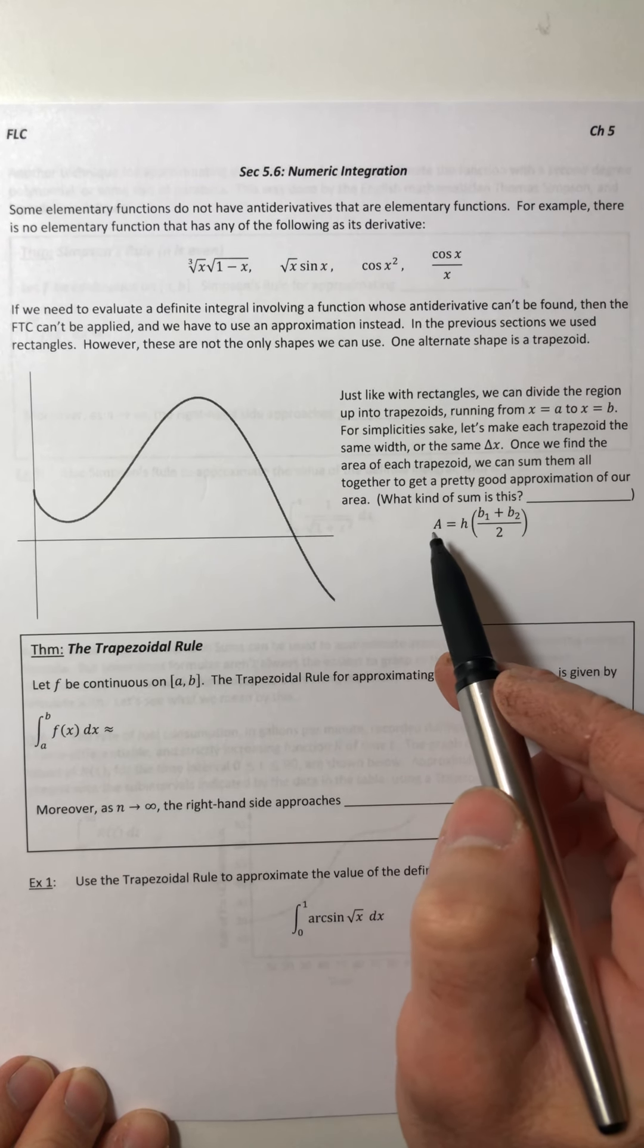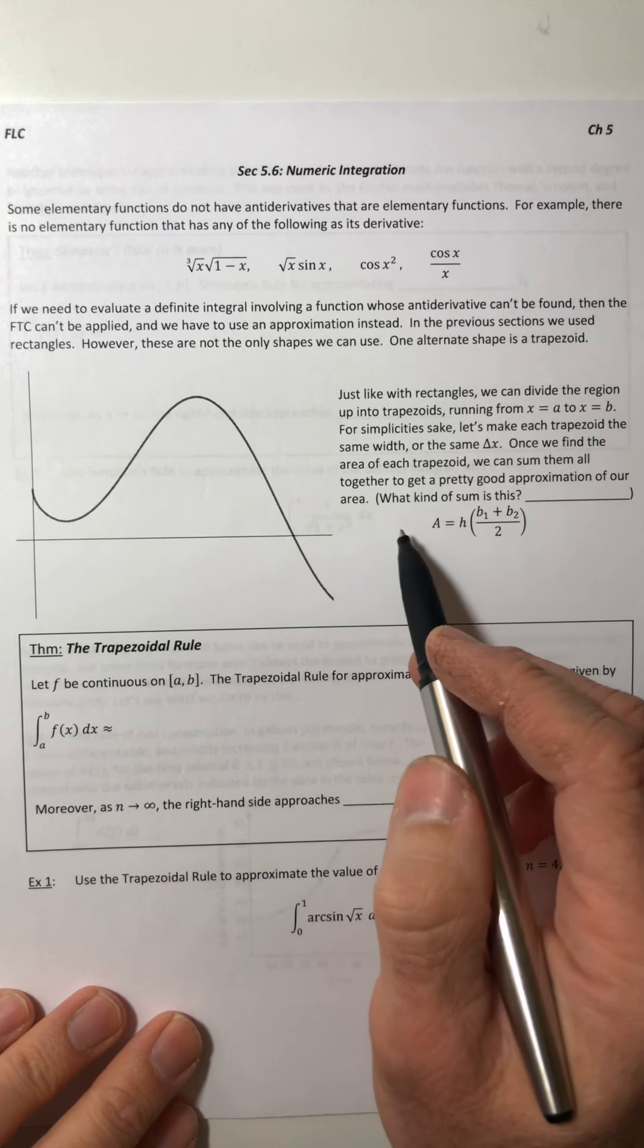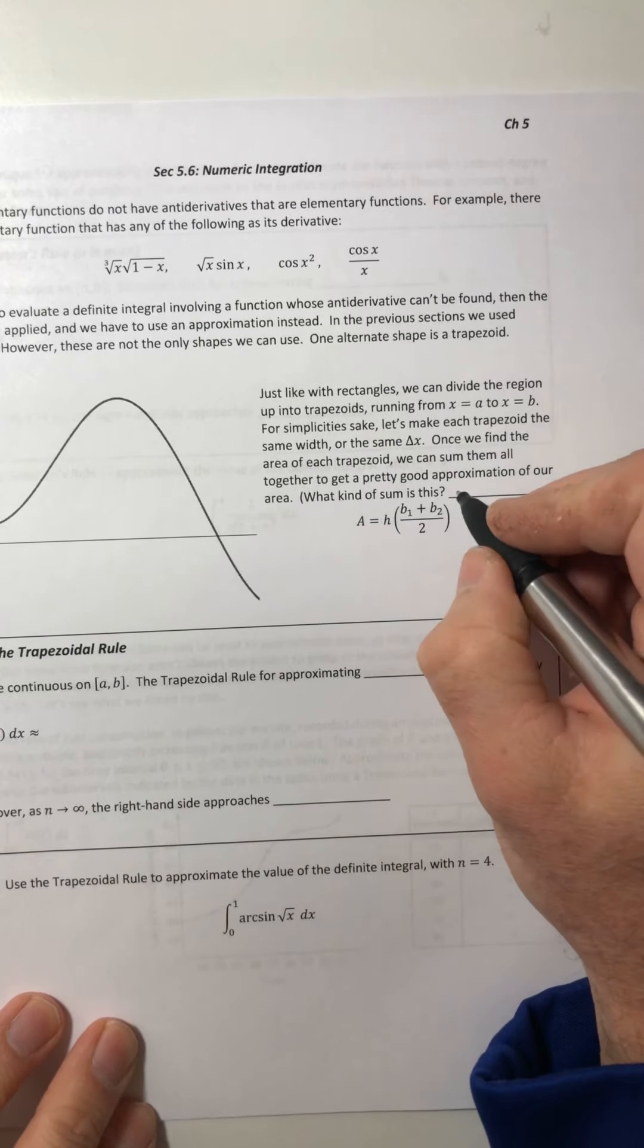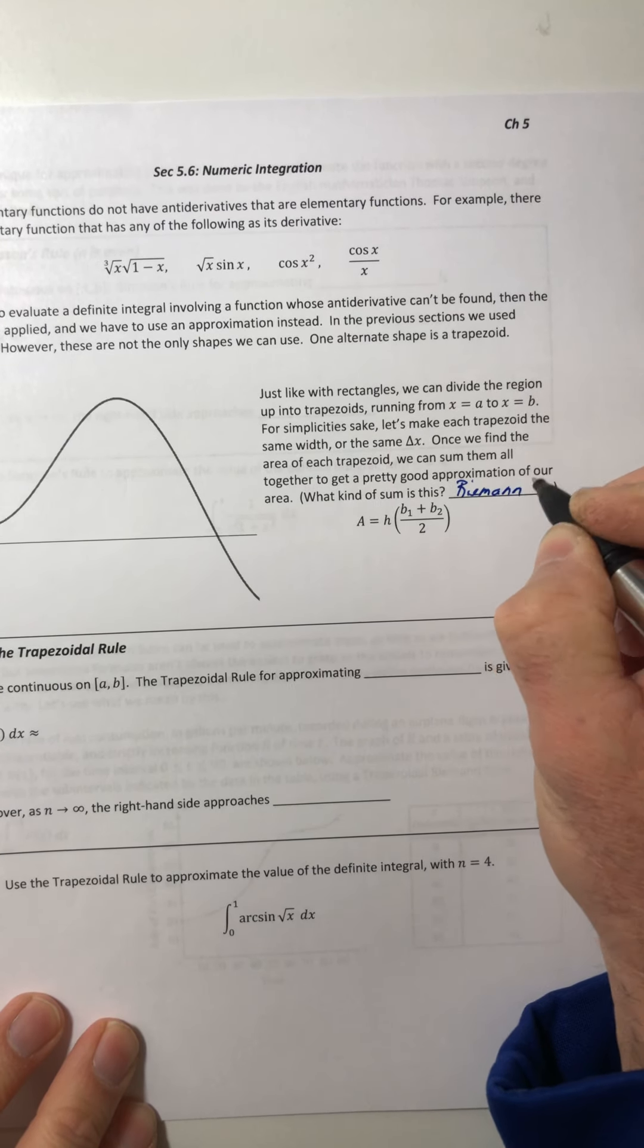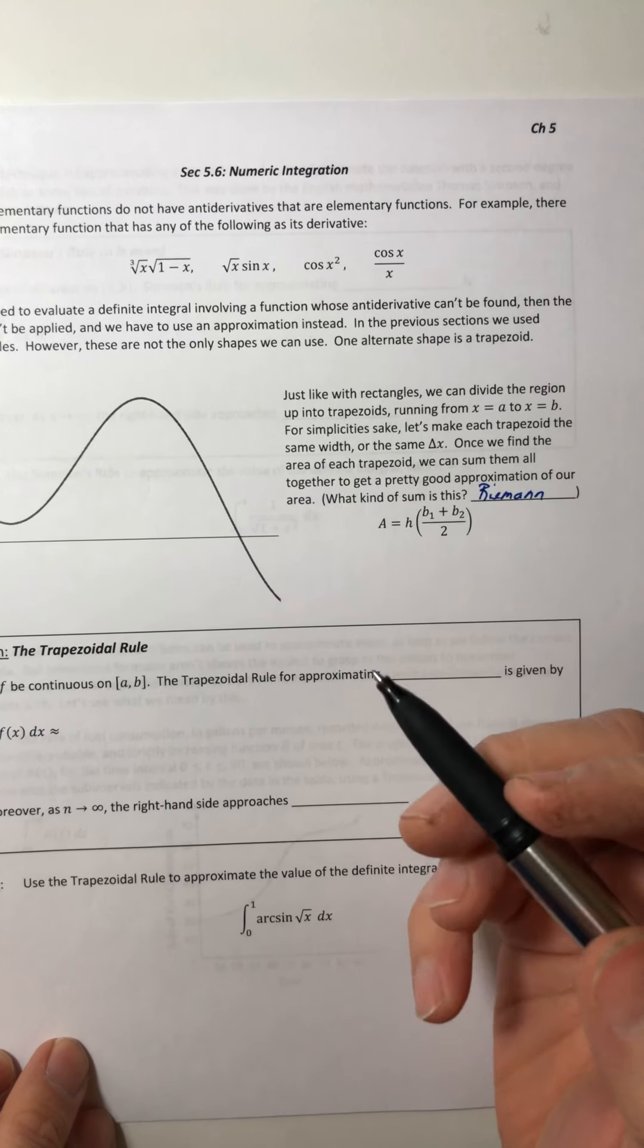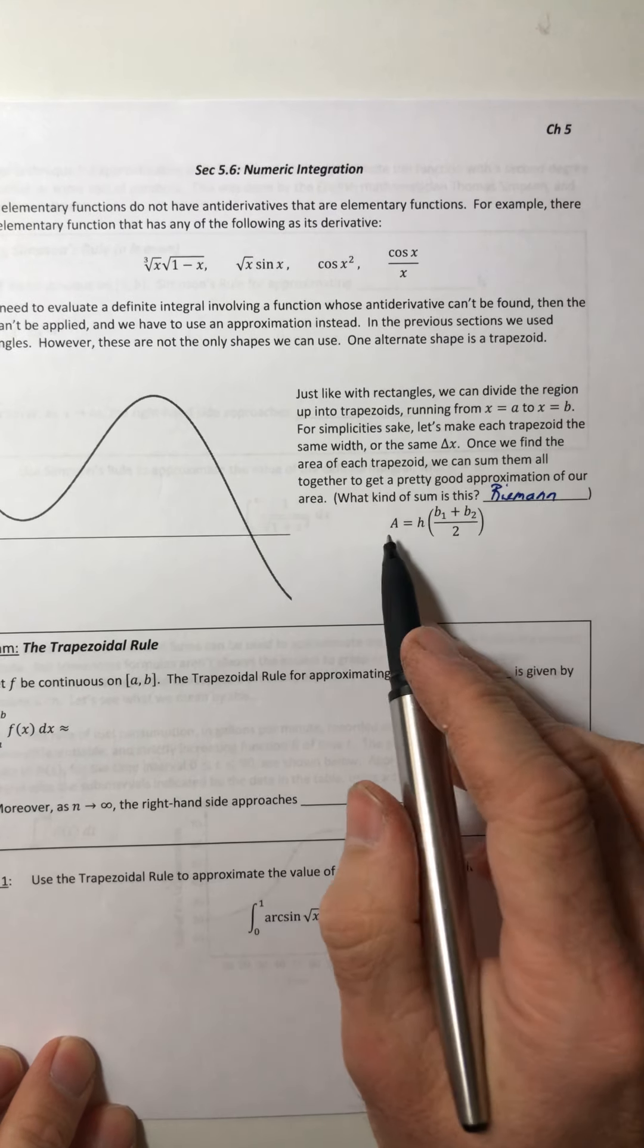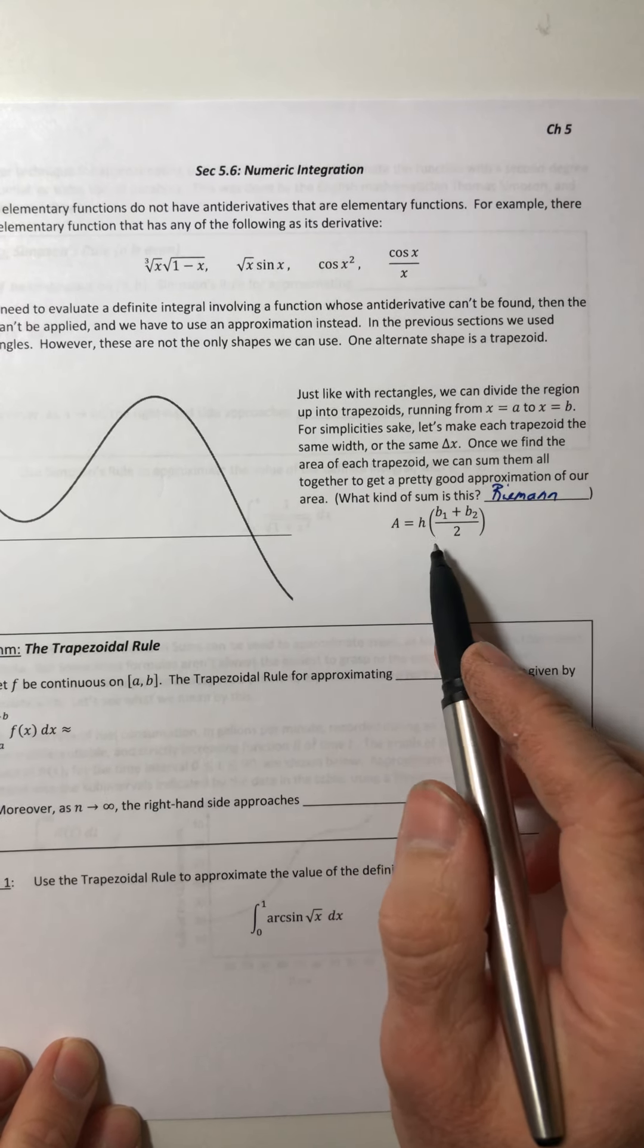And then once we find the area of each of those trapezoids you can sum them all together to get a pretty good approximation of the area. So just as a review, what kind of a sum is this? Riemann. It's just a different type. Remember there are a lot of different Riemann sums out there and this is one of them. So right here this is the area formula for a trapezoid.